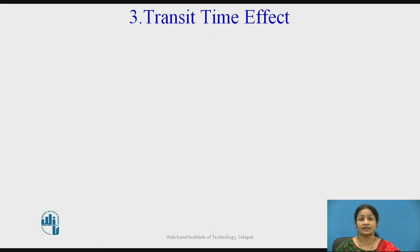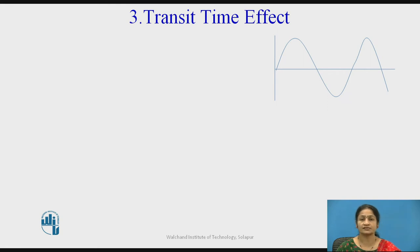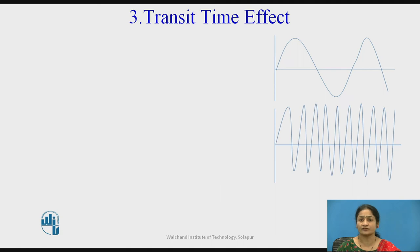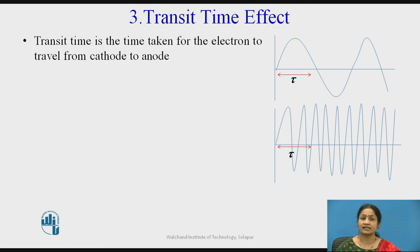The third effect is called the transit time effect. What is transit time? Let us consider a low frequency signal and a high frequency signal and compare these two waves. The time taken for an electron to move from cathode to anode is called transit time, measured by tau (τ). Transit time is the time taken for the electron to travel from cathode to anode.